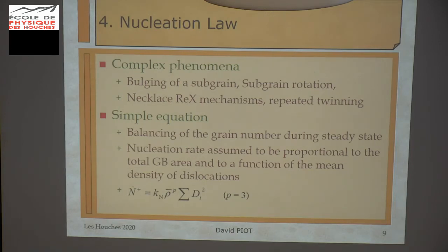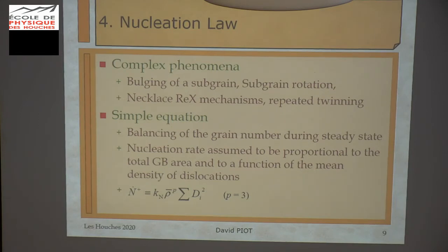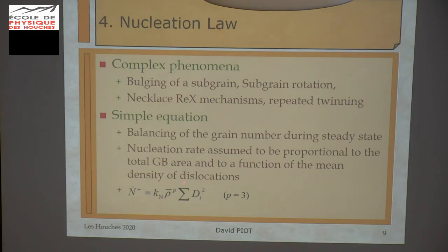We need also a nucleation law. Nucleation involves complex phenomena: bulging of sub-grains, sub-grain rotations, necklace recrystallization especially in the transient regime, and also repeated twinning as a mechanism for nucleation. So it's difficult to derive a very precise law for nucleation. We use classically a simple assumption in which the nucleation rate is proportional to the average dislocation density to the power P — commonly we use 3 — and also the nucleation rate is considered proportional to the total area of grain boundaries in the system, so the sum of d-squared.